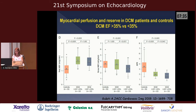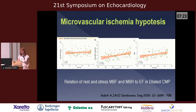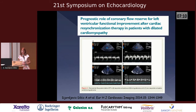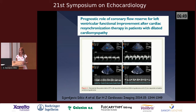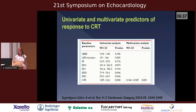This supports the myocardial ischemia hypothesis: low myocardial flow is correlated with low ejection fraction. We proved this in our own study of 240 patients who were candidates for CRT therapy. We measured coronary flow reserve and found that patients with a coronary flow reserve greater than 2 had a better response to CRT therapy and were more likely to be responders.